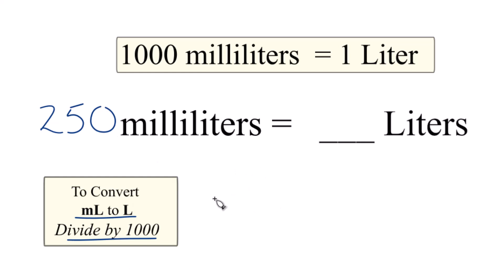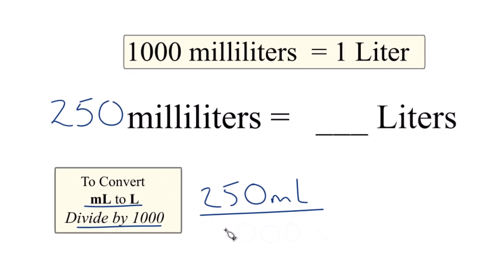But let's write it out with the units. So 250 milliliters, and we're going to divide that by 1,000. And that's 1,000 milliliters in one liter. So we're just going to call this milliliters per liter.